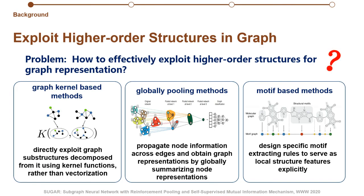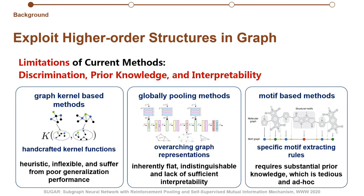How to effectively exploit high-order structures for graph embedding? There are three main types of methods. The graph kernel-based methods directly exploit graph substructures decomposed from it using kernel functions. The global pooling methods propagate node information across edges and obtain graph embeddings by globally summarizing node embeddings. The motif-based methods design specific motif-extracting rules to serve as local structure features explicitly. However, the aforementioned methods have many limitations in terms of discrimination, prior knowledge, and interpretability.